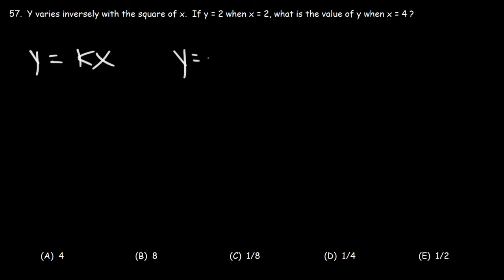If y varies inversely with x, x is on the bottom, but k is always on the top.